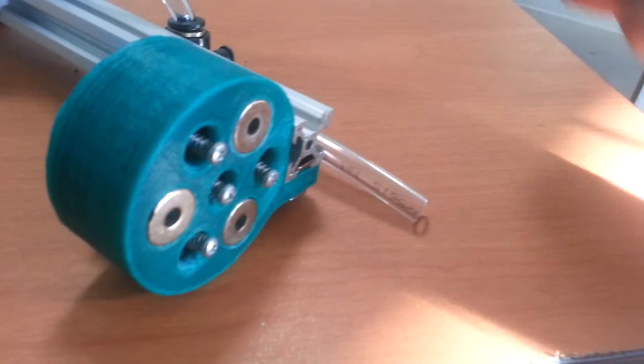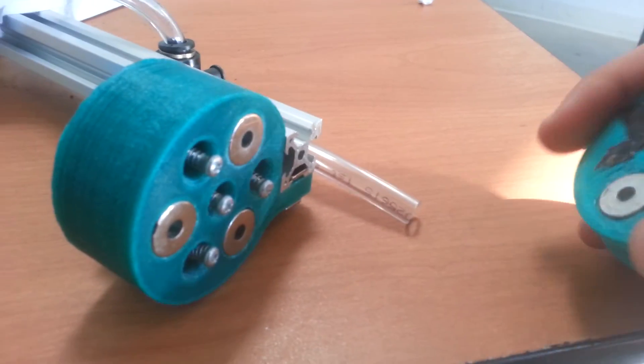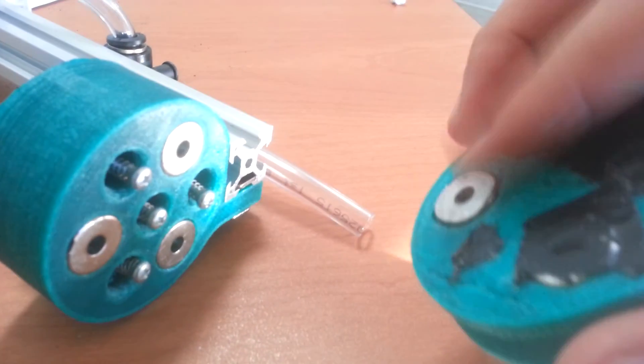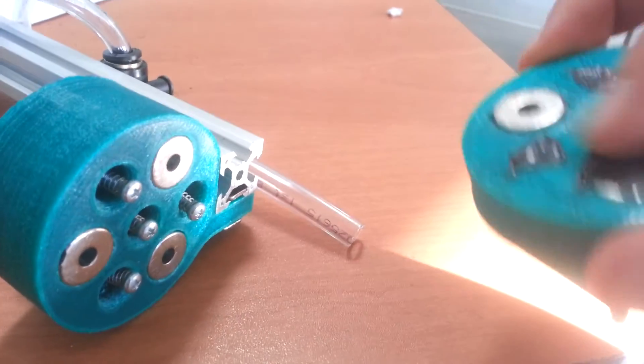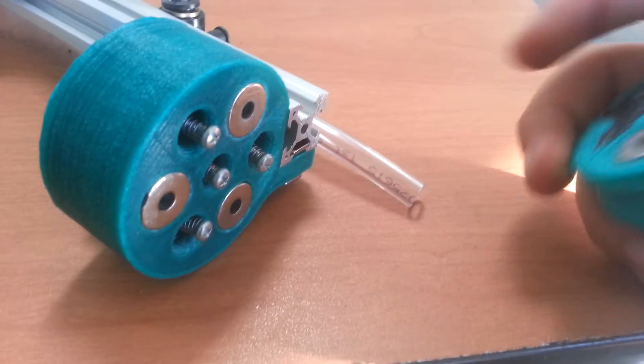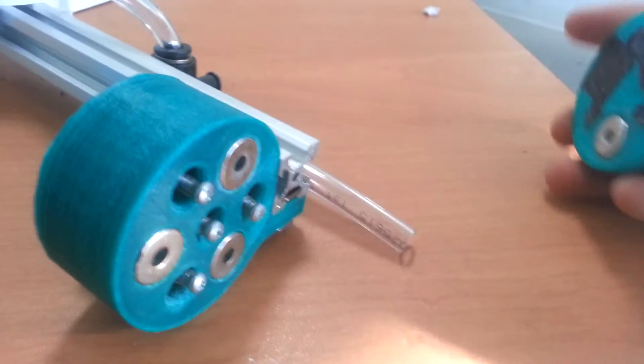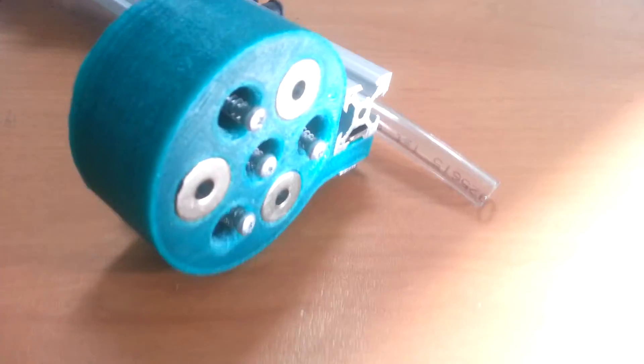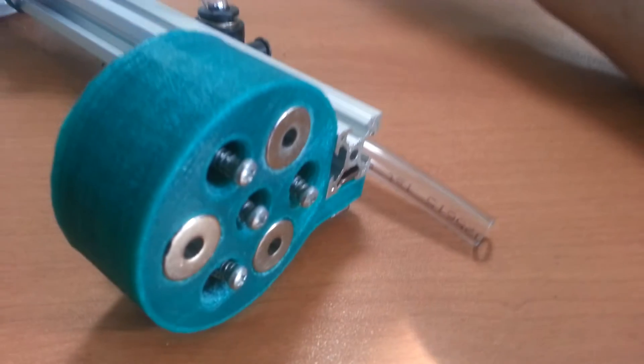So I think what we're going to do in the next iteration is have the three magnets here and then just washers on the tool. So the washers will still be magnetically attracted, but they won't have their own magnetic force. So it'll be much easier to pull the tool off.